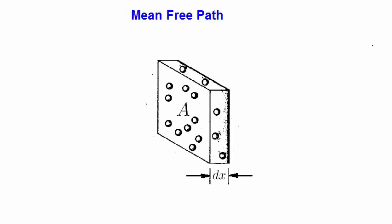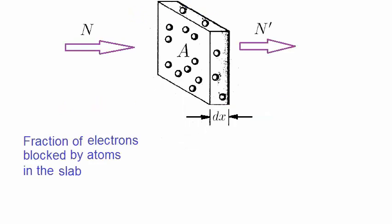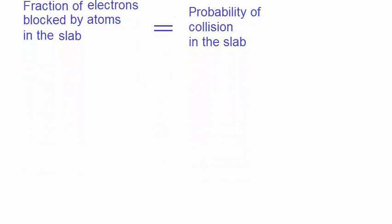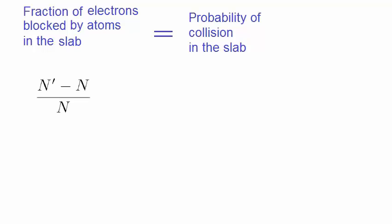Let's now look at collisions through a plasma that's much larger than an infinitesimally thin slab, to work out the average path length travelled by electrons between collisions. Let's consider again the infinitesimally thin slab, and assume that there are n electrons heading towards it, and n' electrons leaving it. As we said previously, the fraction of electrons blocked by atoms in the slab is really equal to the probability of a collision in the slab. The fraction of electrons blocked by atoms in the slab is given by the difference between the number of atoms entering and exiting the plasma, divided by the number of atoms entering.